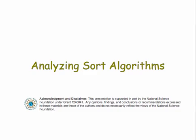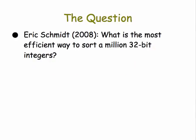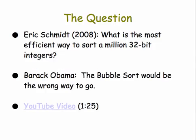Let's take a look at the efficiency of sort algorithms. The big question that Eric Schmidt asked President Obama in 2008 was: what is the most efficient way to sort a million 32-bit integers? And the president, he was a senator at the time, answered the bubble sort would be the wrong way to go. If you want to see the interview for yourself, you can check out the YouTube video.